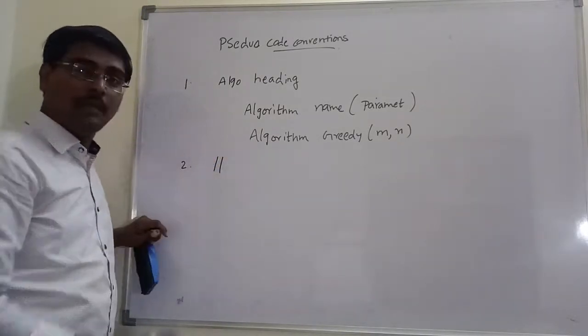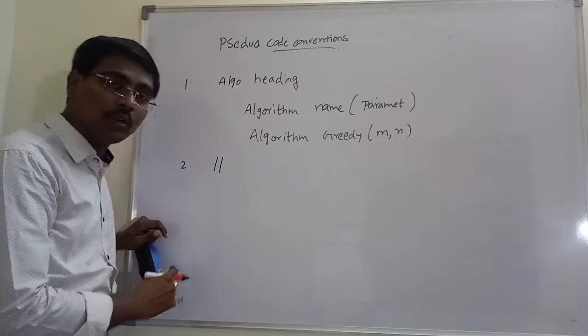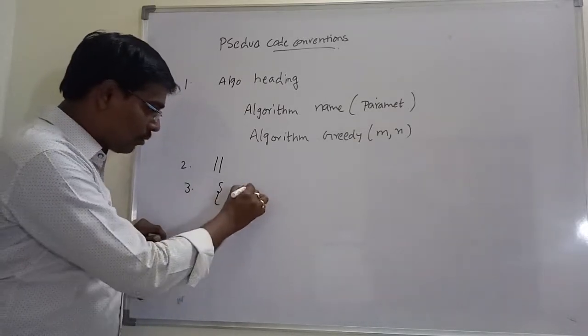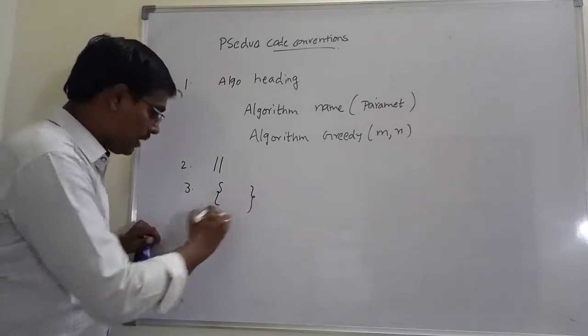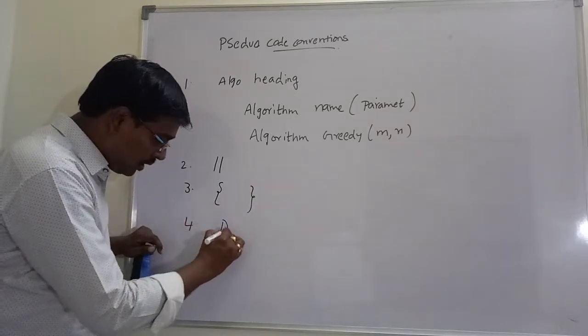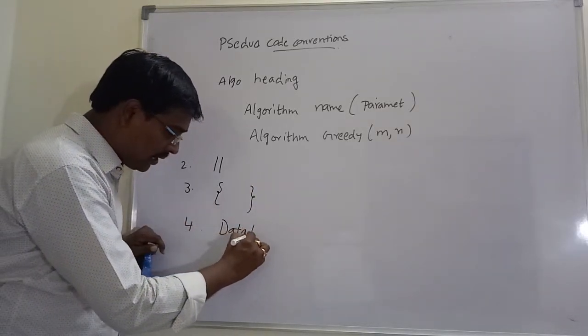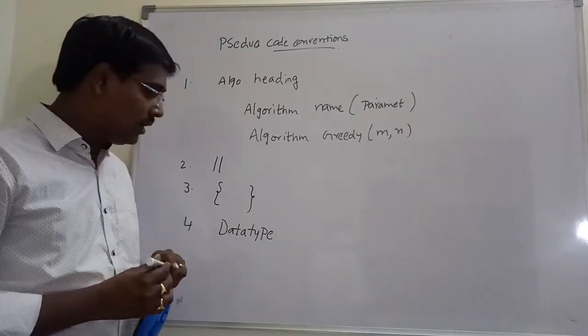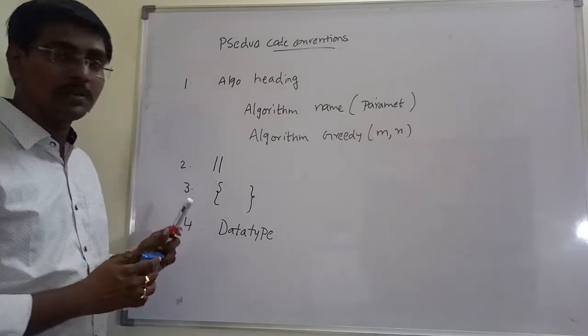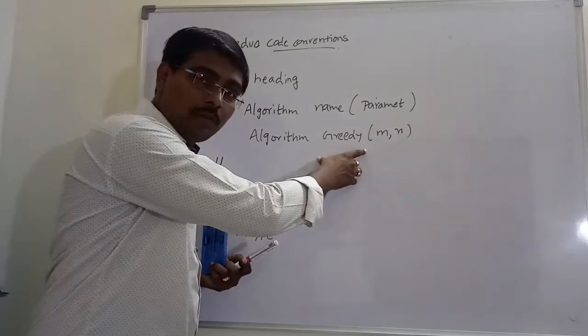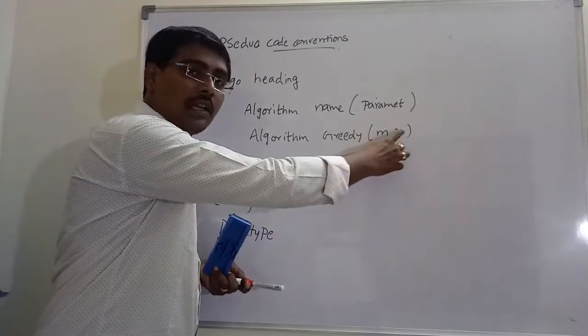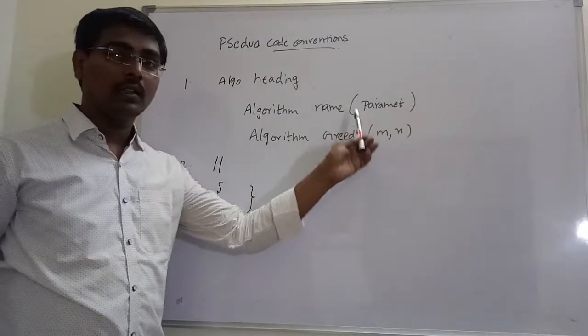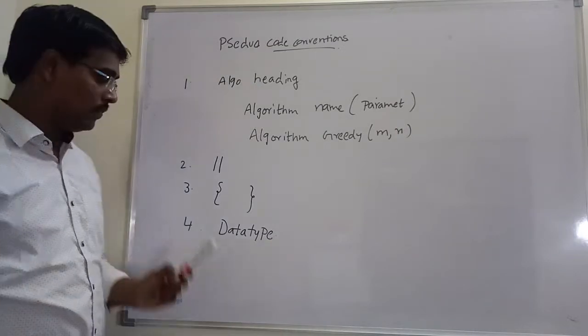Next, comments begin with double slash, similar to programming language, and we use flower brackets. And next one, no need to specify any data type in algorithm. There is no need of specification of data types.